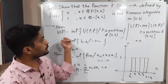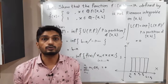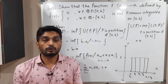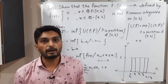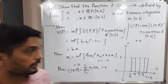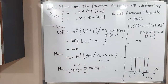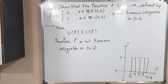Therefore, the upper integral equals b − a and the lower integral equals 0, so L(P,f) and U(P,f) have different values — they are not equal. That is why we conclude that the function is not Riemann integrable on the closed interval [a,b]. Thank you.